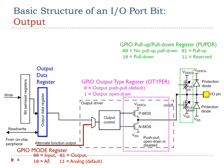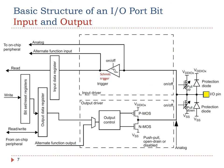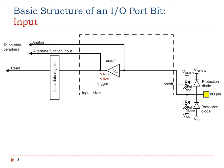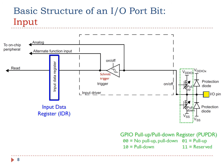The output type register sets the output pin as either push-pull or open-drain. The pull-up pull-down register specifies whether the pin is pulled up to a high voltage, or pulled down to the ground. Except the GPIO mode register, there are two other registers related to GPIO input: the input data register, IDR, and the pull-up pull-down register, PUPDR.